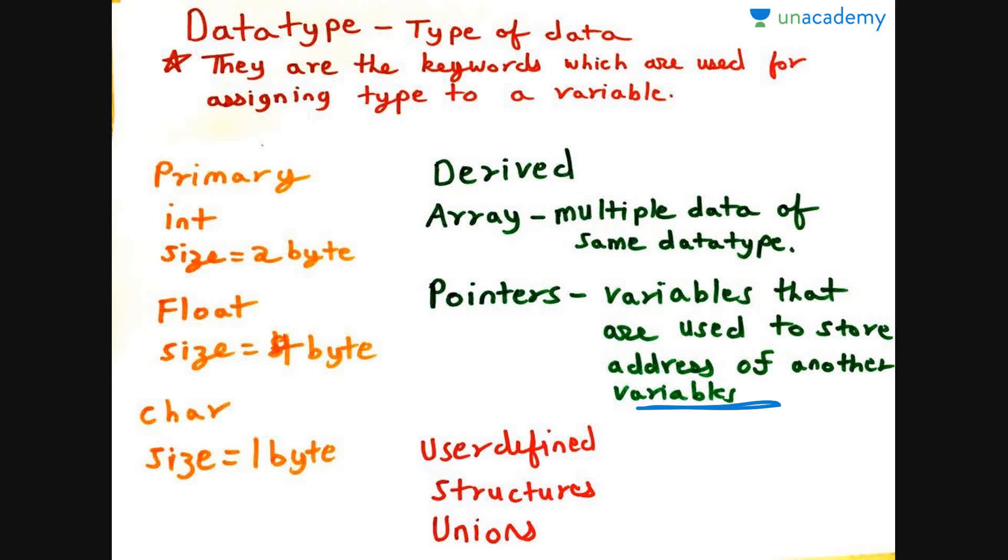Now the third ones are the user defined that are defined by the users. They consist of structures and unions. You will get to know later. Now arrays is the opposite of the structures. Hence I was saying there to remember same data type, whereas structures can be used for multiple data types, which we will learn later.